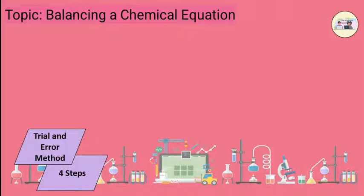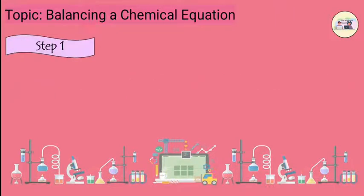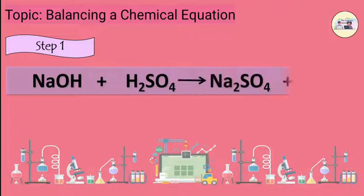Let us learn with the help of an example: Sodium Hydroxide plus Sulphuric Acid produces Sodium Sulphate plus Water. Step 1: Write the chemical equation from the given word equation. NaOH plus H2SO4 gives Na2SO4 plus H2O. Equation 1. Step 2.